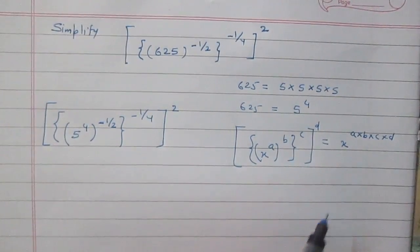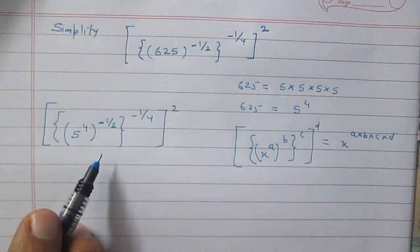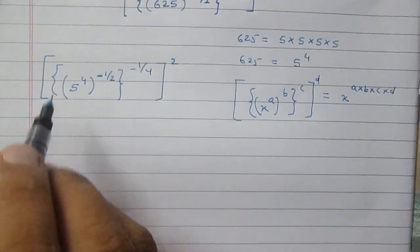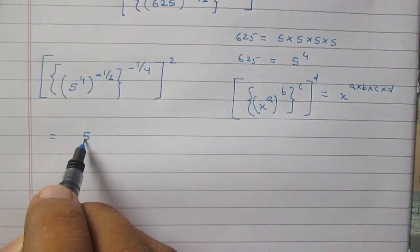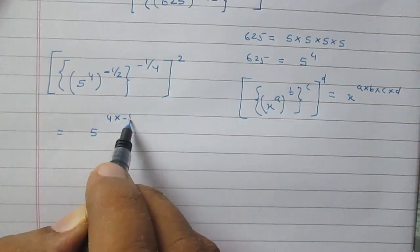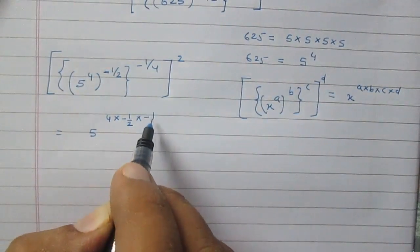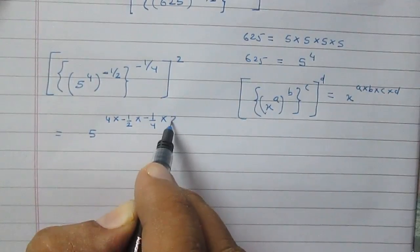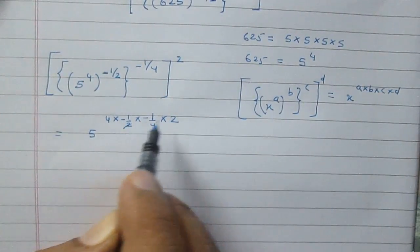So using this rule, we can write this quantity as 5 raised to the power: 4 × (-1/2) × (-1/4) × 2.